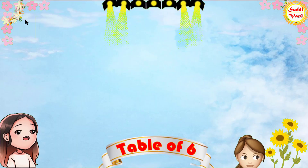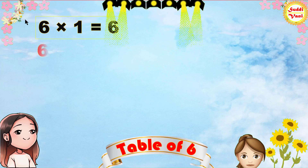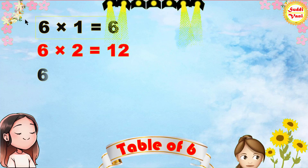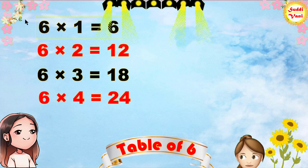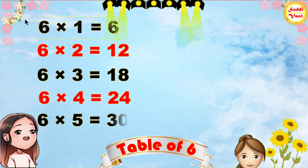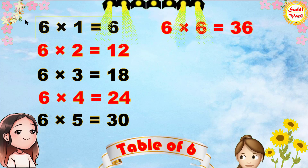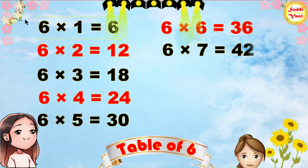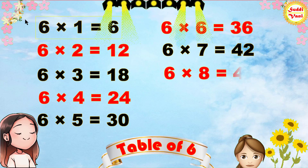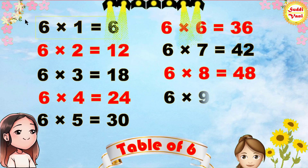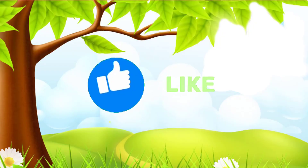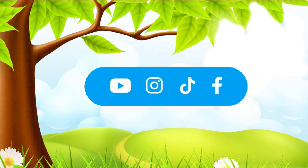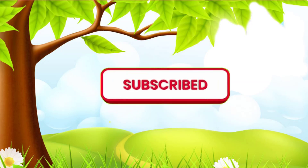Once again: 6 1s are 6, 6 2s are 12, 6 3s are 18, 6 4s are 24, 6 5s are 30, 6 6s are 36, 6 7s are 42, 6 8s are 48, 6 9s are 54, 6 10s are 60. See you next time.